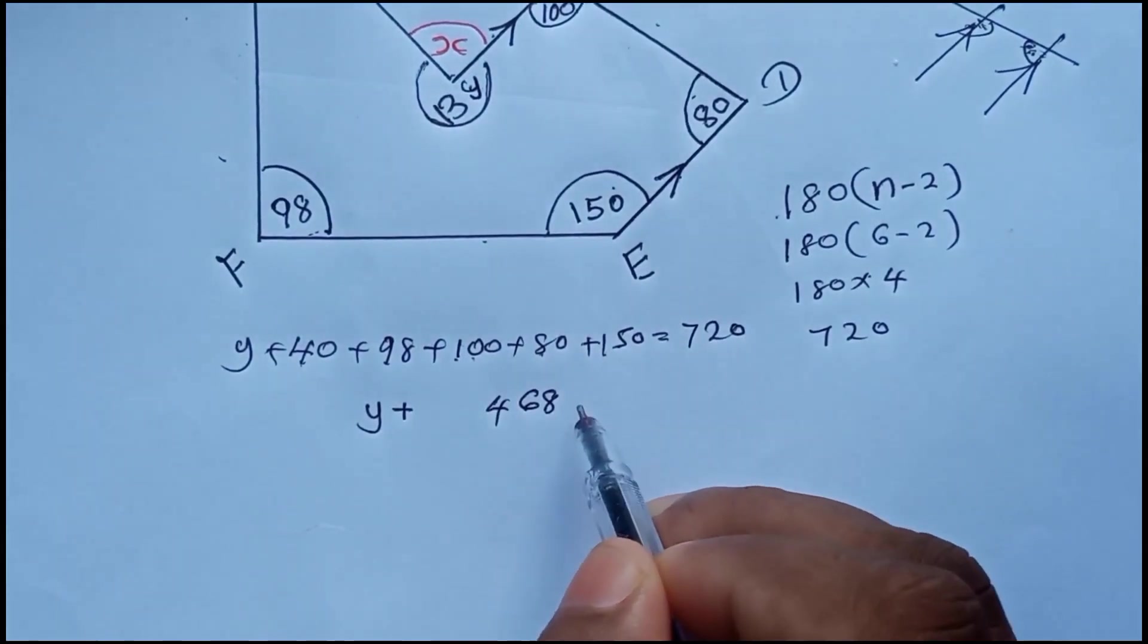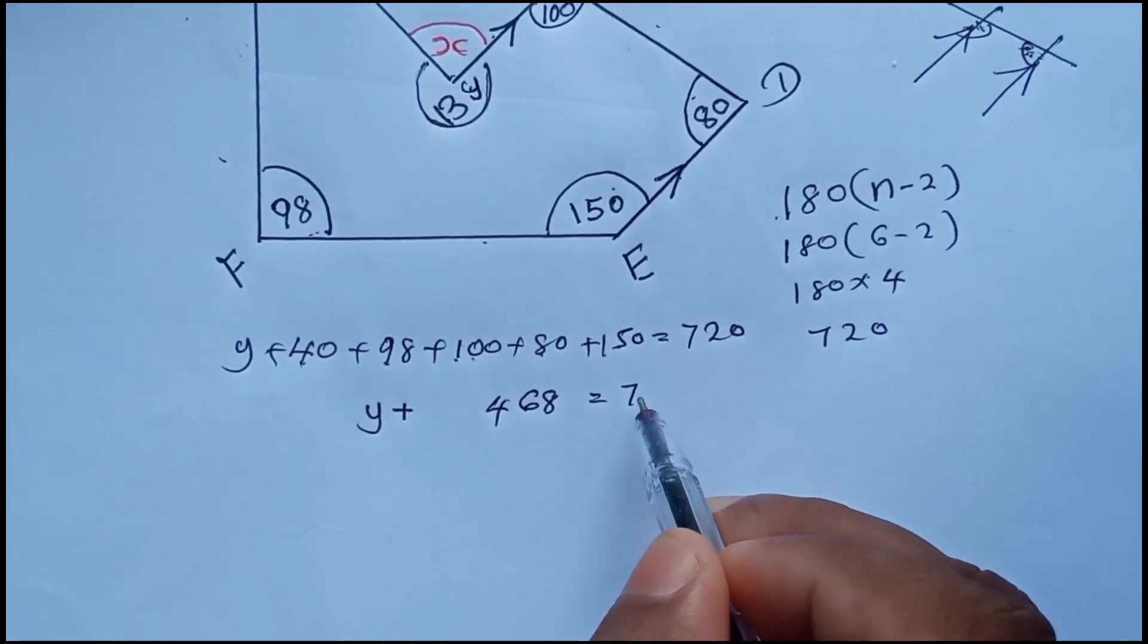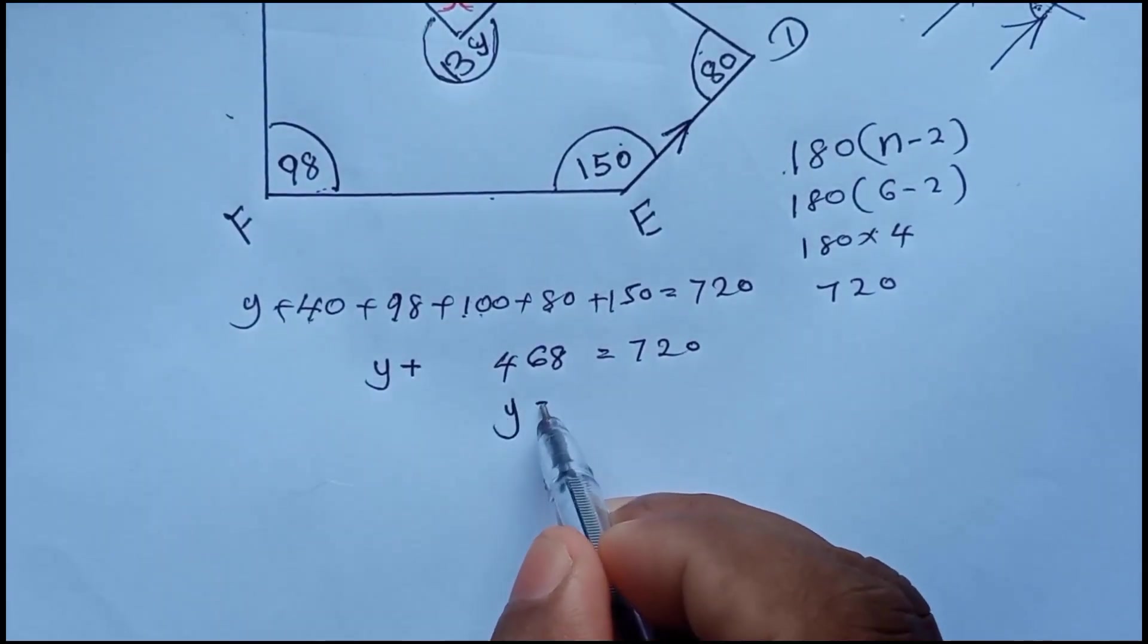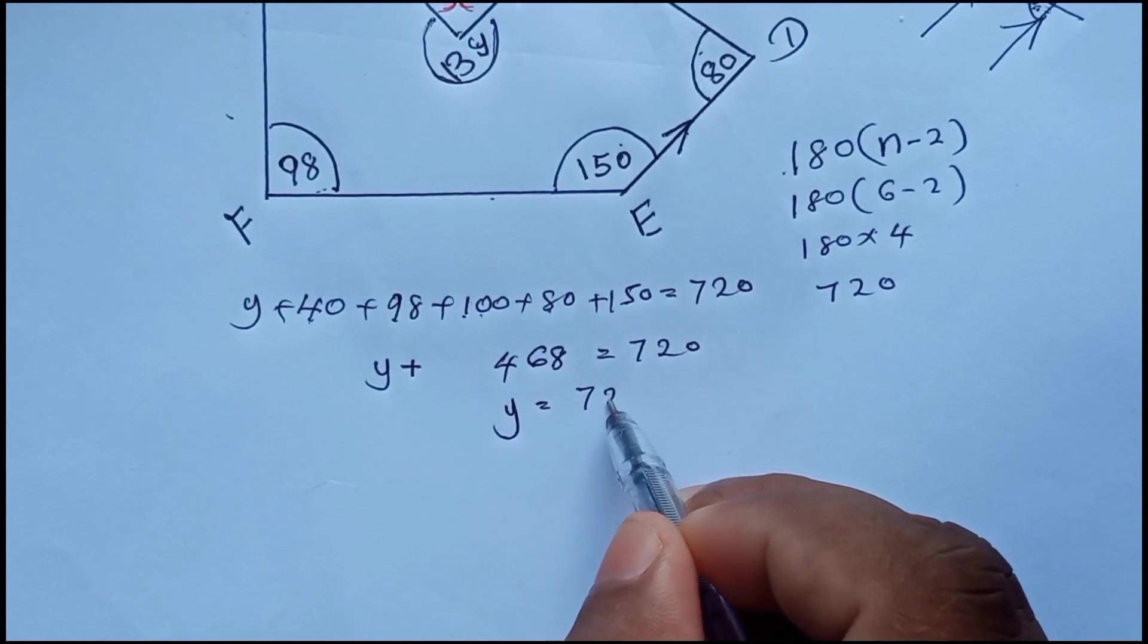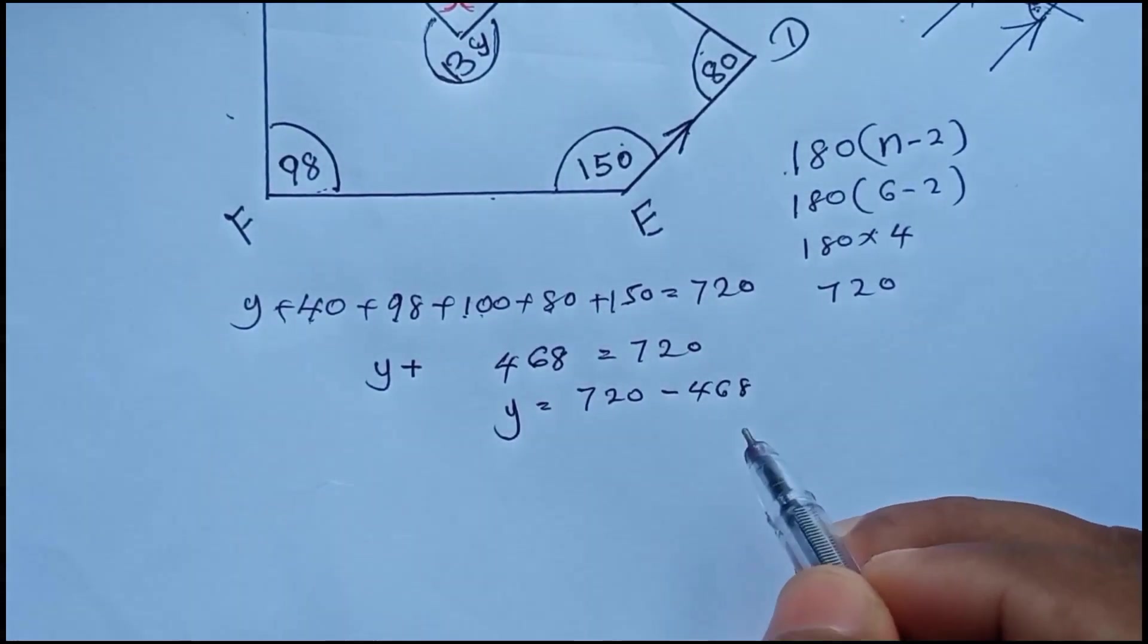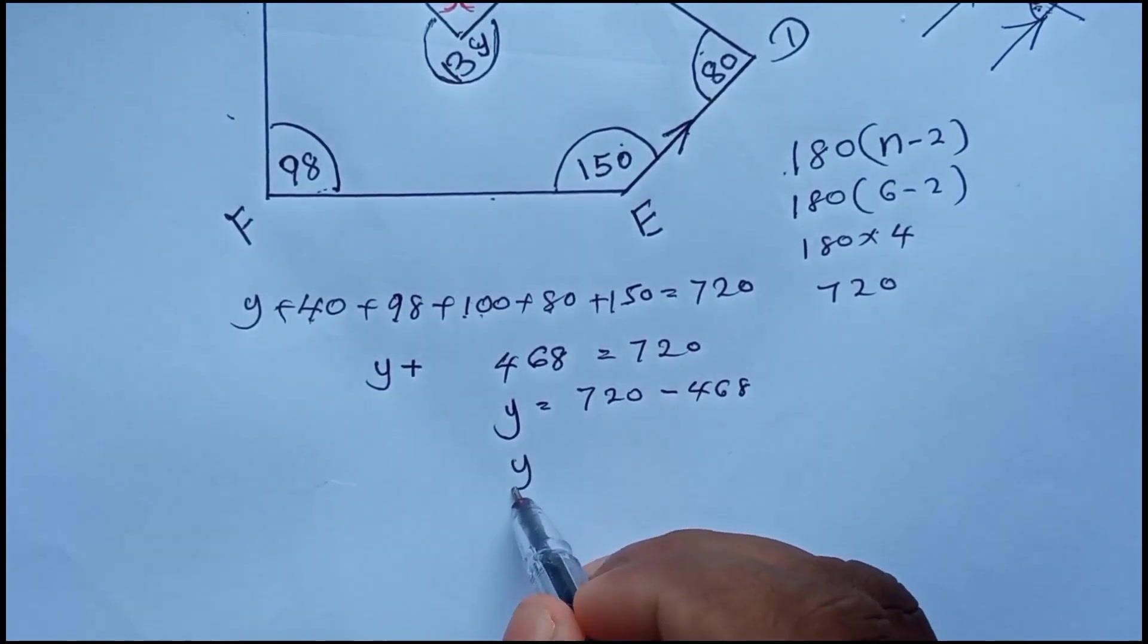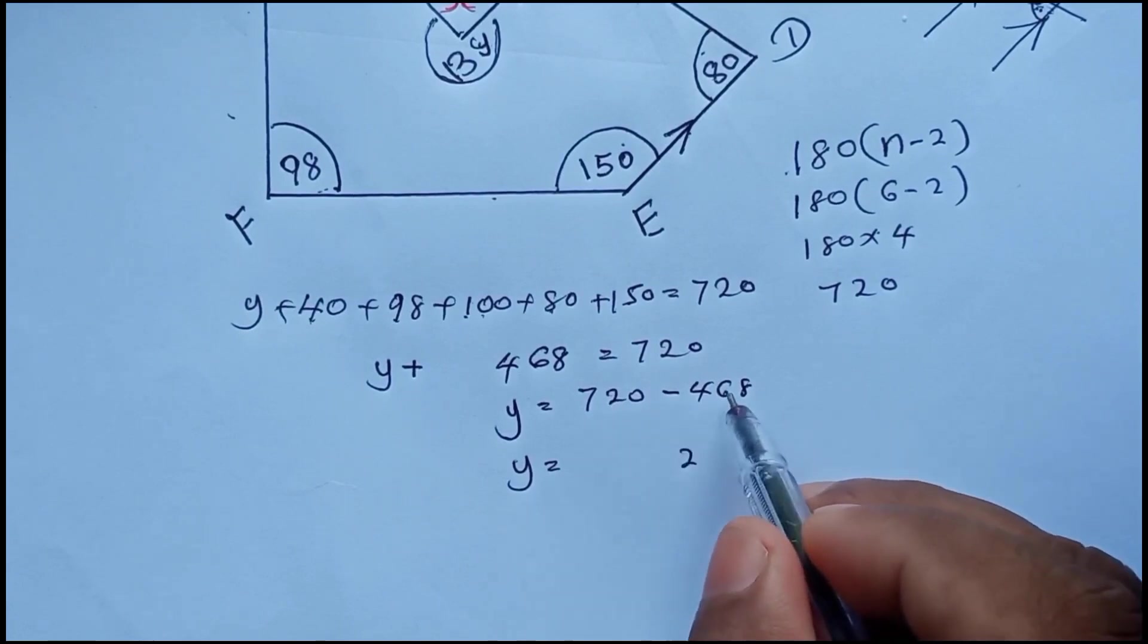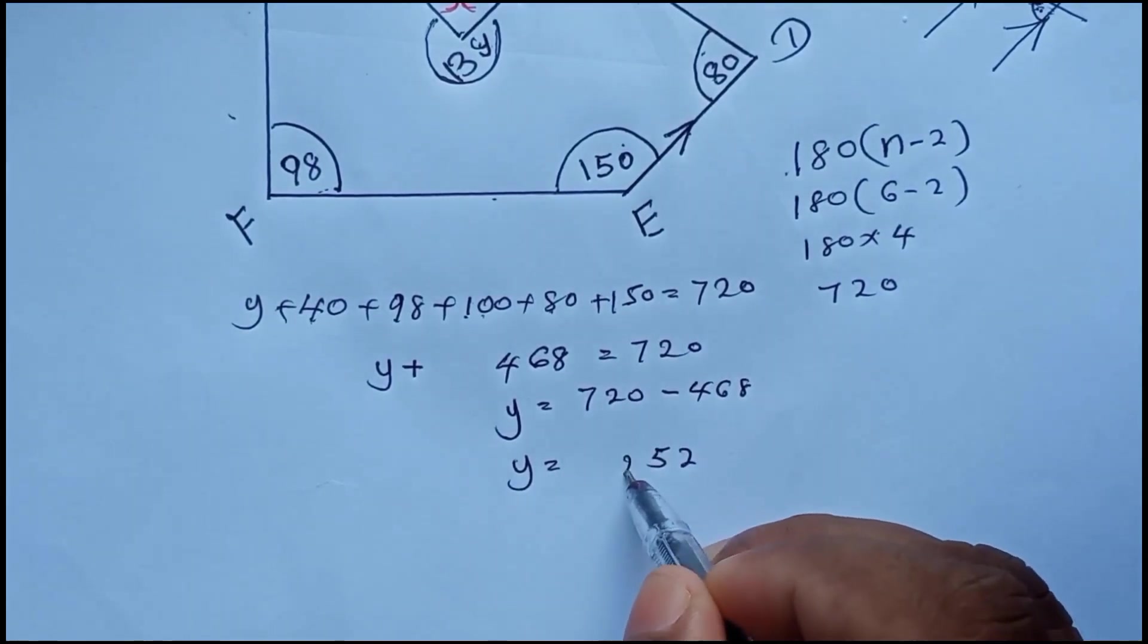468 equals 720. Now to get y from 720, you have to subtract this, 468, right? So here will be the value 2, then here will be 5 and here 2.